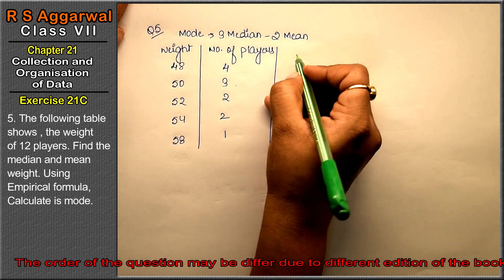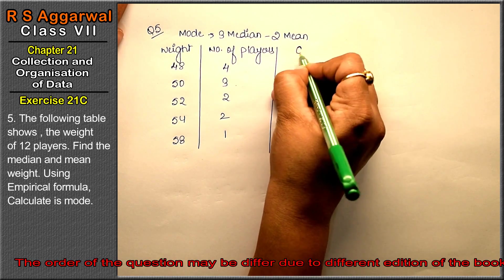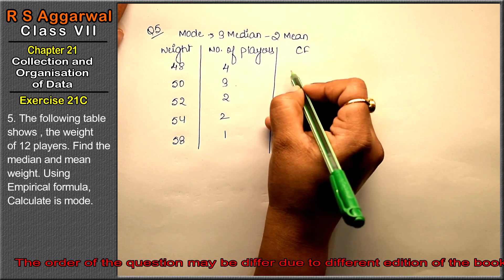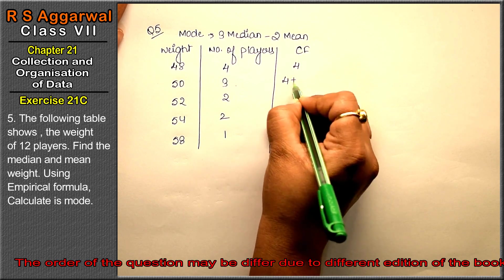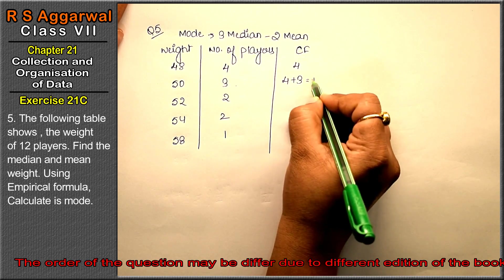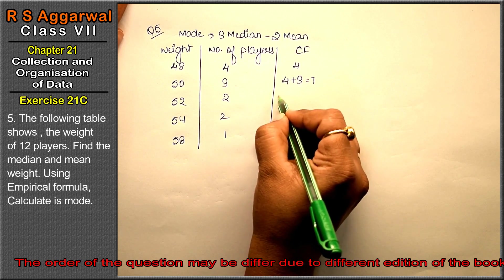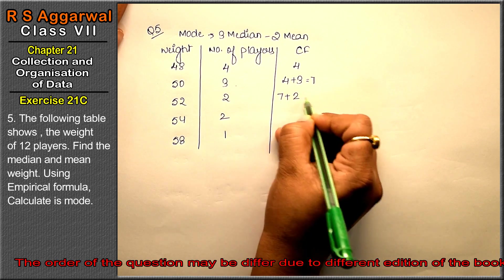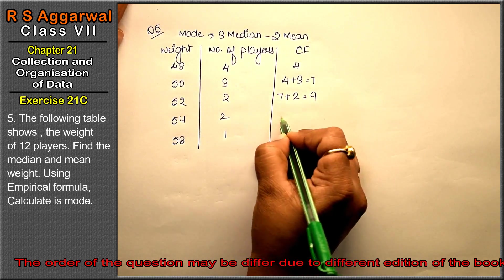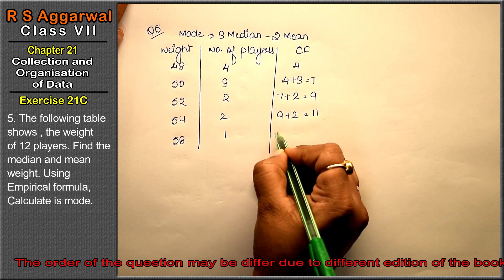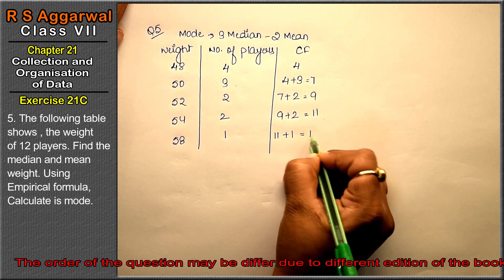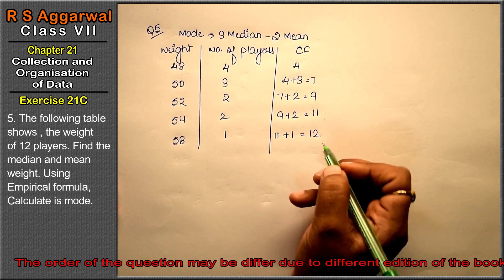Now we will find the mean and cumulative frequency. In the cumulative frequency, first as it is, then we will add: 4, then 7, 7 plus 2 is 9, 9 plus 2 is 11, and 11 plus 1 is 12.